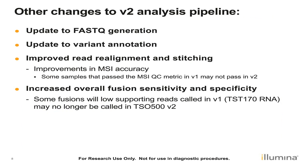Other changes to be aware of: there's an update to FASTQ generation, an update to variant annotation for more accurate annotation, and updates to the RefSeq databases. There's also improved read alignment and stitching, which leads to improvement in microsatellite instability accuracy. An important note is that some samples that may have passed QC metrics in V1 may not pass in V2 because of the improved accuracy. There's also increased overall fusion detection for sensitivity and specificity — some fusions with low supporting reads called in V1 may no longer be called in V2, so it's worth comparing if you are going from V1 to V2.